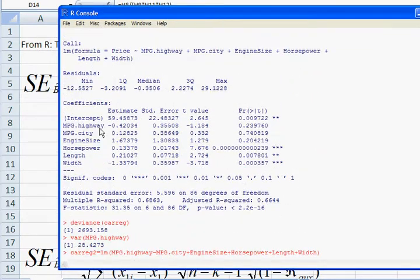We were looking at this regression where we're explaining price with miles per gallon highway, miles per gallon city, engine size, horsepower, etc., to see which of these variables are related to price.